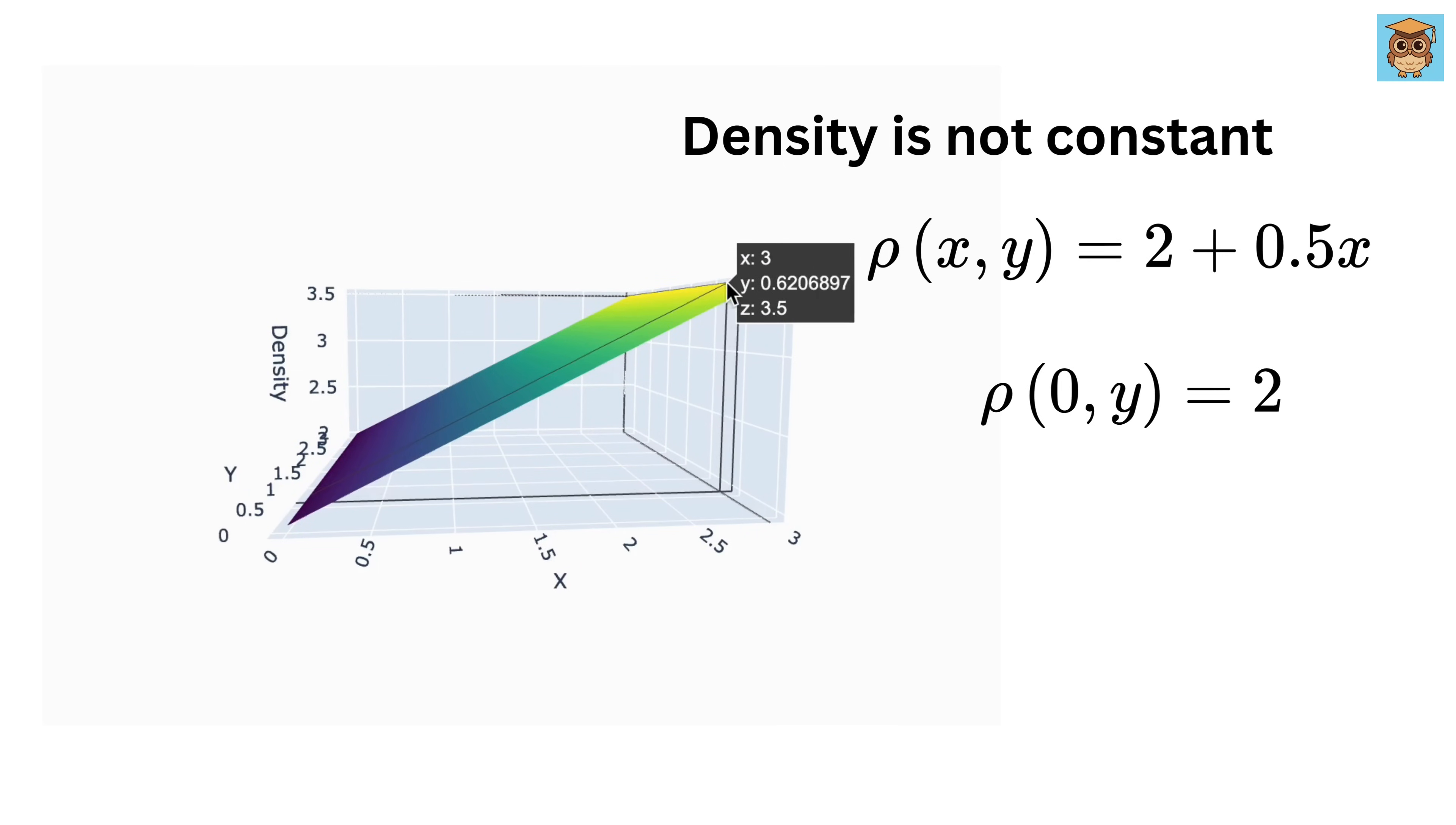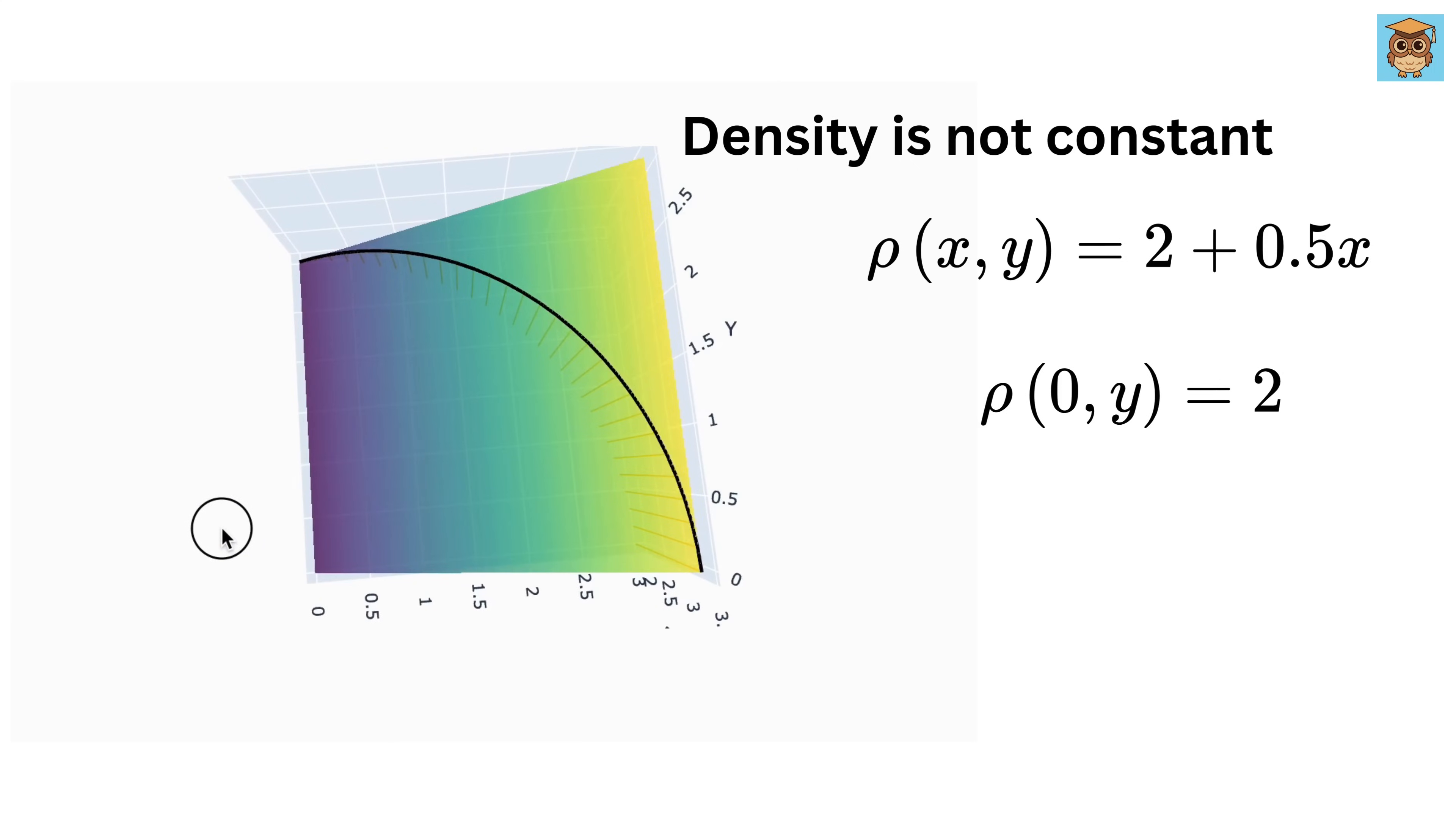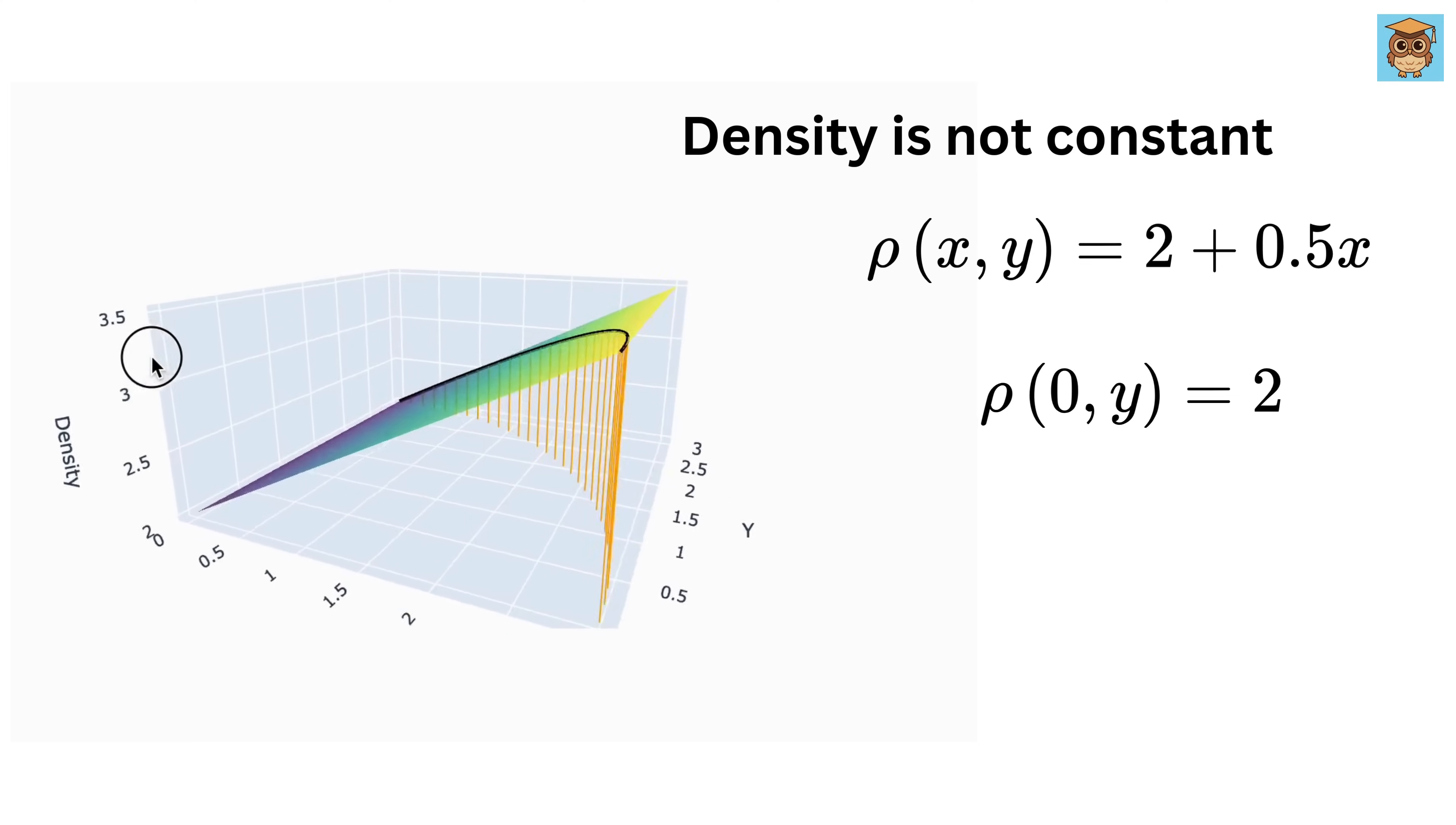and at, say, x equals 3, and we vary along y, z value is 3.5, which means density is 3.5 there. Now, if I place our wire on this density surface along the curve, which is a quarter circle, the wire will look something like this.